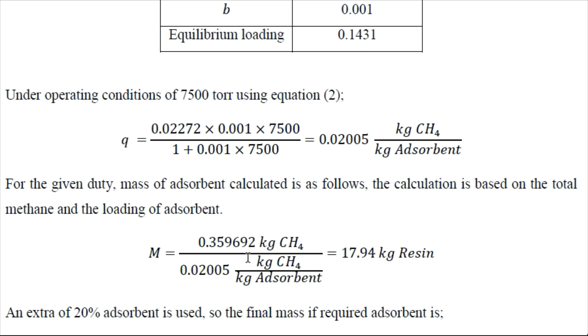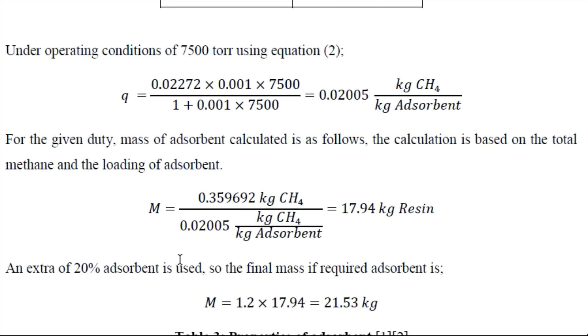So based on the amount of methane removal we can determine the amount of resin required. So we are taking 20% extra resin for this particular case. We can take it as 25 or 30% as well. So mass of resin required comes out to be 21.53 kg.